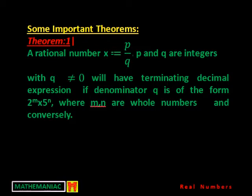One thing you should note is that it is not mentioned here — this p by q should be in the lowest form. What I would like to say is that this number should be in the lowest form, meaning x, that is the rational number, should be in standard form. By standard form we mean the reduced form of the number — there should not be any factor common to them. After that only we will check whether the denominator can be expressed in this particular form.